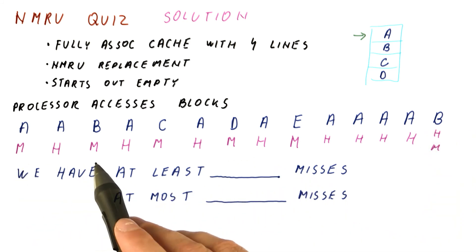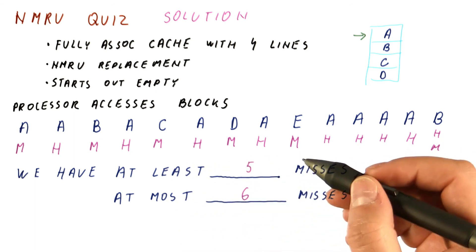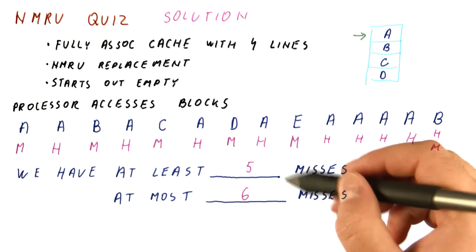In total, we have one, two, three, four, five, or six misses. So this is the final answer to this quiz.